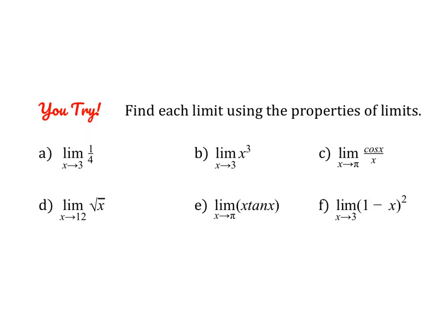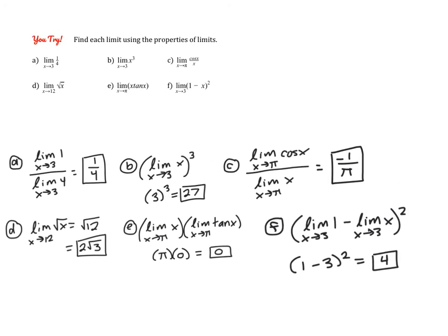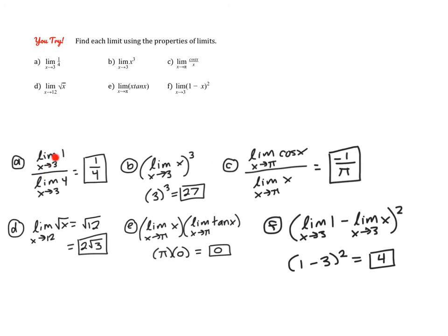Go ahead and pause the video and give these a try — please try to use your properties and go out of your way to apply them. Now check your work: even though 1/4 is already a constant, I went further and used the quotient property. We also have the power property, quotient property, direct substitution, the product property, and the difference and power property used here.